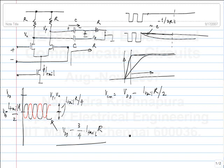In the last class we were discussing techniques to increase the swing. The limitation to the swing is that the transistors can go into triode region. So you have to raise this entire waveform. I want to keep the same output swing but increase the common mode — that way I will prevent the transistors from going into triode region. That is what we discussed last time.